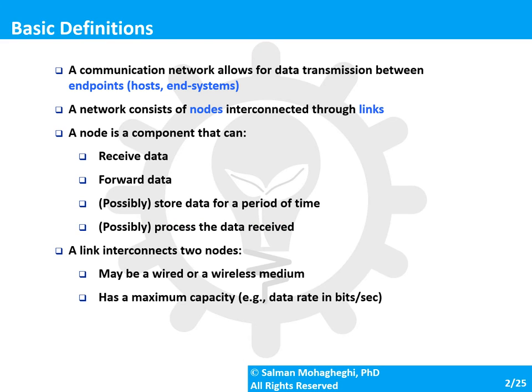First, what is a communication network? A communication network is a network that allows for transmission of data between two devices. Within the communication network terminology, we use the terms device, endpoint, host, user, or end system interchangeably. All of them mean the same thing.